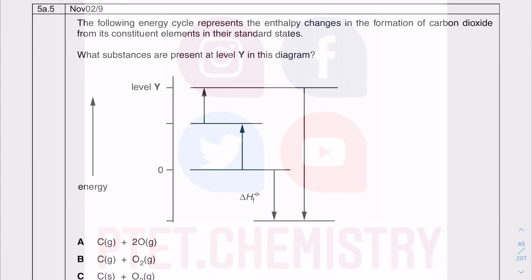So this is the last question of this short tutorial video. They give you the energy cycle. So going up is going to be positive, meaning endothermic. Coming down is exothermic because it's negative. So what substances are present at level Y in this diagram? So this involves the formation of CO2. So we start off from the constituent elements. We are looking at the elements having the enthalpy of formation of zero. So you have the carbon solid plus the O2 gas.